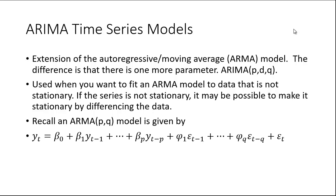I want to talk about ARIMA time series models. This is just an extension of the autoregressive moving average, or ARMA, model that I previously discussed. If you haven't seen that one, you may want to watch that video first. The difference is just one more parameter, D. From the ARMA model you have P and Q — P refers to the number of autoregressive lags and Q refers to the number of error term lags.